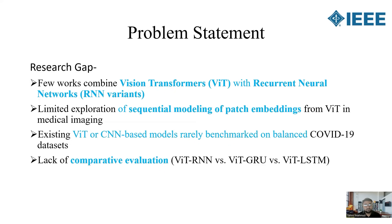In the existing literature, very few works have integrated Vision Transformer (ViT) with recurrent neural network variants such as GRU and LSTM. Moreover, there has been little exploration of how ViT patch embeddings can be modeled sequentially. Additionally, existing ViT or CNN-based models have rarely been evaluated on balanced COVID-19 datasets. To bridge this gap, my research introduces and compares three hybrid architectures: ViT-RNN, ViT-GRU, and ViT-LSTM.